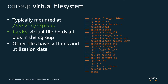Each directory inside a given subsystem's root represents a cgroup. In each directory you'll see a file called tasks, which holds all process IDs for the processes assigned to that cgroup. Other files let you read settings and utilization data, or change the settings. To move a process to a different cgroup, all you need to do is write the process ID into the target cgroup's tasks file.